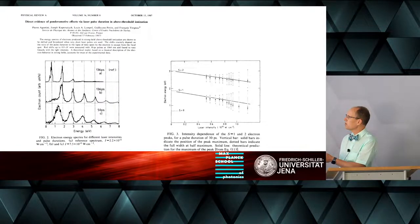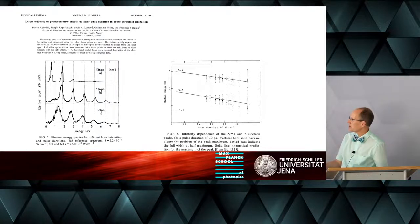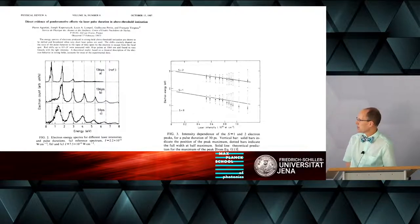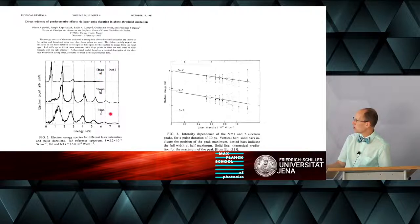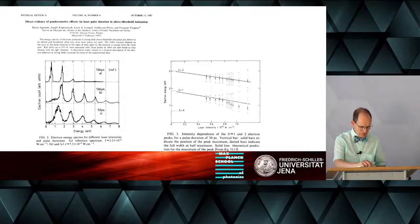Here's a publication by Pierre Agostini, the man who discovered ATI almost 10 years before. You see what one would expect: these peaks shift with laser intensity, and here is the line of what would be expected. They changed the intensity by shortening the pulse. So this has been done.